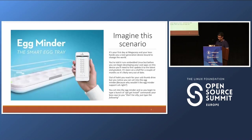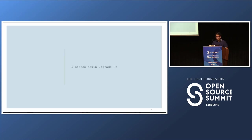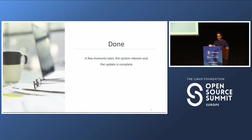Let's imagine a scenario. It's your first day at Megacorp, and your boss hands you a next-generation device — the Eggminder, the smart egg tray, so you're not one egg short for tomorrow's omelet. You're told it runs Embedalynx, but before you can begin developing your cool apps, you'll need to update to the latest and greatest. Out of habit you reach for your USB thumb drive, but you notice you can SSH into the Eggminder. Your boss says: don't be silly, just type OSTree admin upgrade dash R. A few moments later, the system reboots and the update is done.